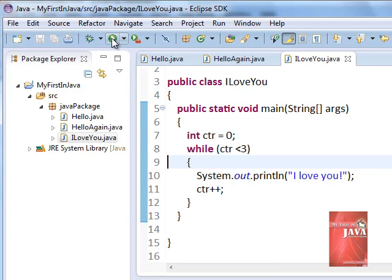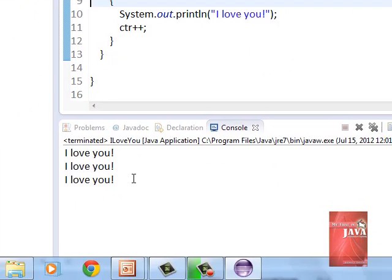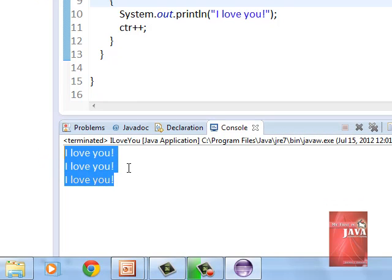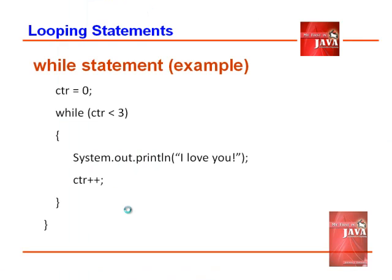Let us save this one and run it. We have the same output. Let us study how the looping occurs within the program. Our variable CTR will store an initial value of 0. The next step is to evaluate the condition associated with the while statement. The question is, is CTR less than 3? Since we have just assigned value 0 to CTR, 0 is less than 3. If the condition is true, the program executes the block statements within the braces. This time the program executes system.out.println 'I love you' displaying the message.